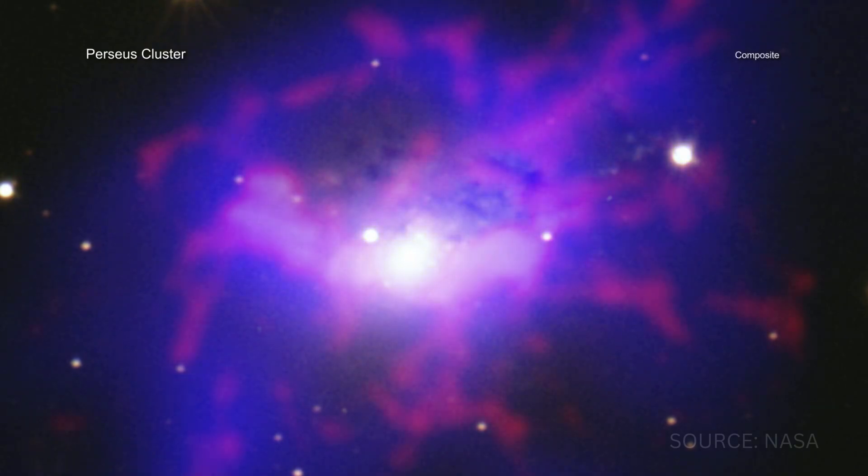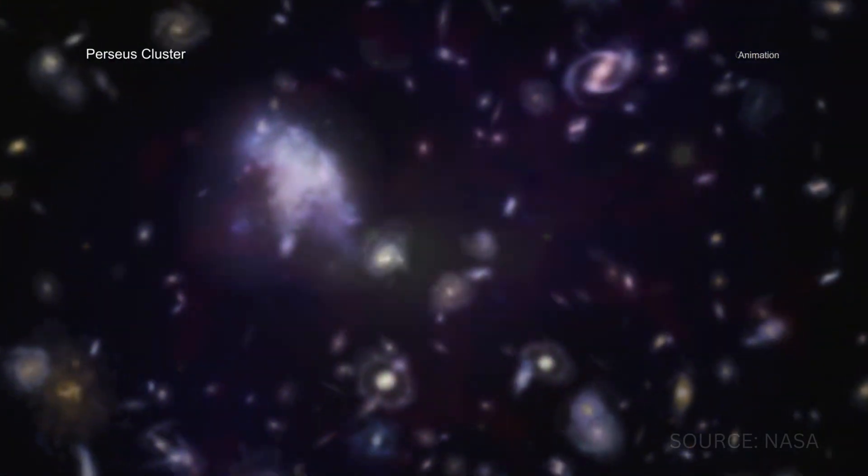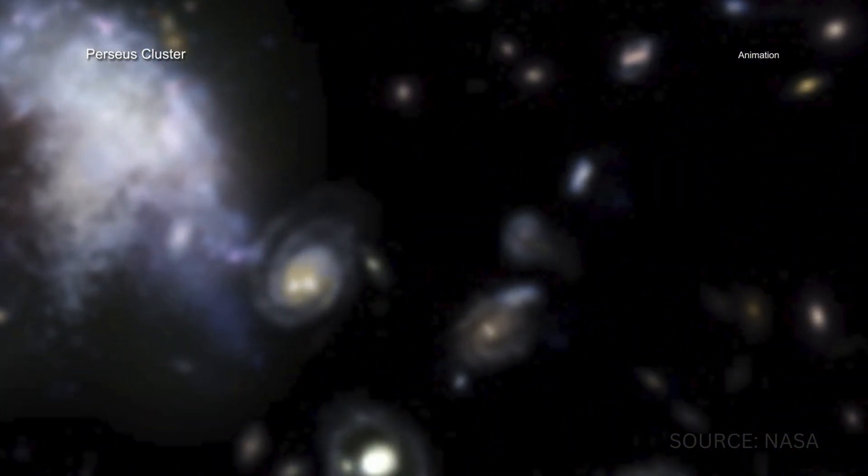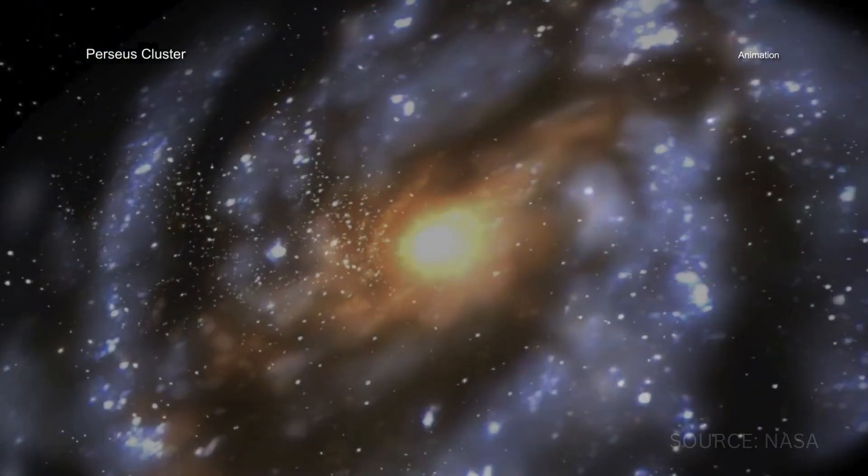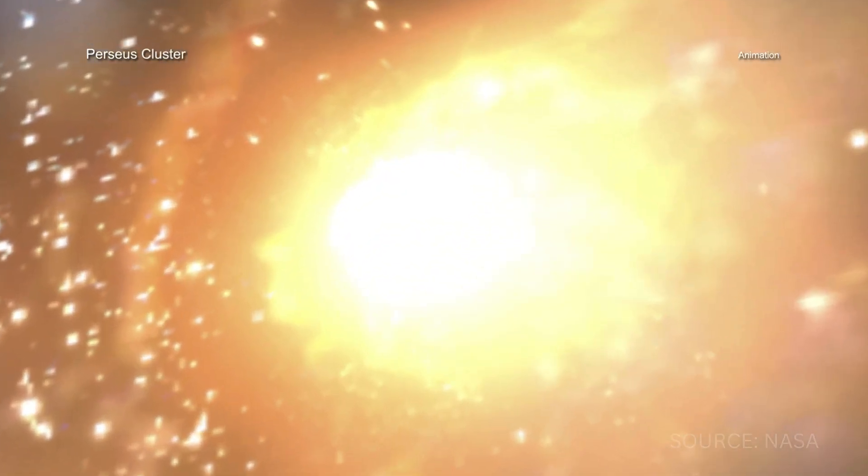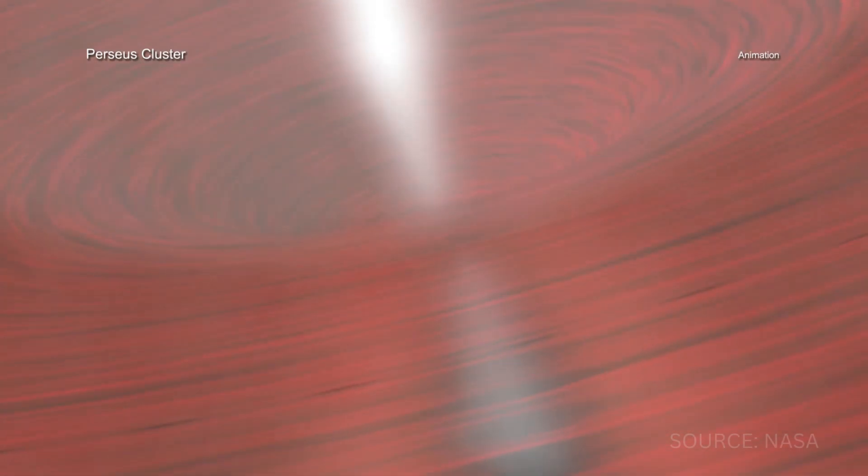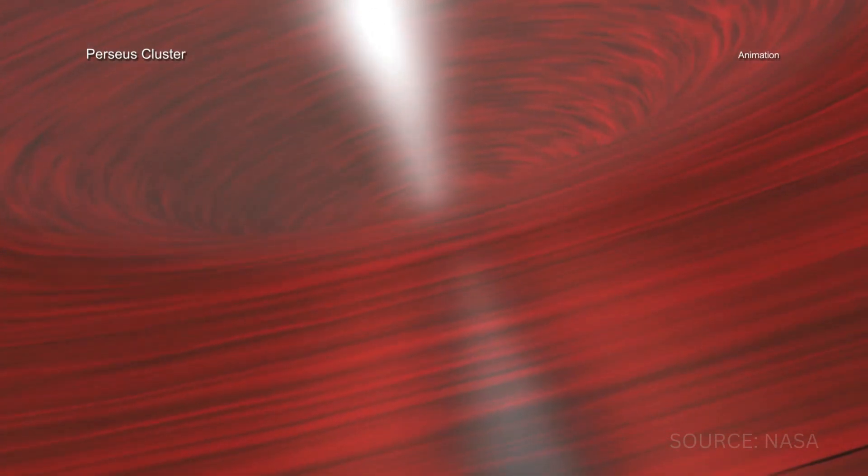Back in 2003, astronomers using NASA's Chandra X-ray Observatory found something wild. Pressure waves rippling through this gas, caused by a supermassive black hole at the cluster's center. These waves were like cosmic sound waves, but way too low for us to hear. 57 octaves below middle C, with a frequency that takes 10 million years to complete one cycle.